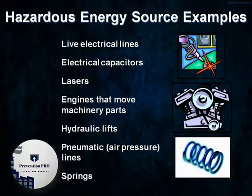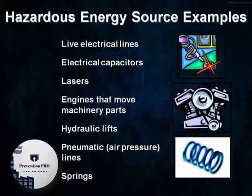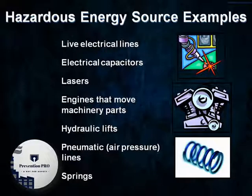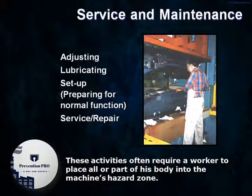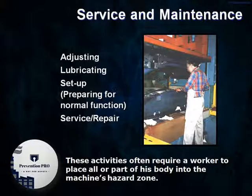Hazardous energy source examples include: live electrical lines, electrical capacitors, lasers, engines that move machinery parts, hydraulic lifts, pneumatic air pressure lines, and springs. Service and maintenance activities include adjusting, lubricating, setup, and preparing for normal function — these activities often require a worker to place all or part of their body into the machine's hazard zone.